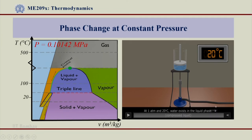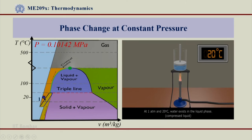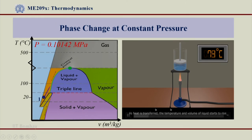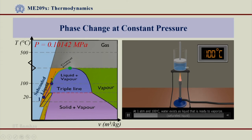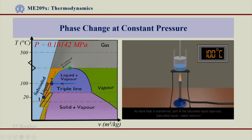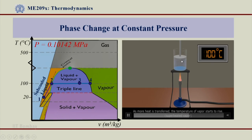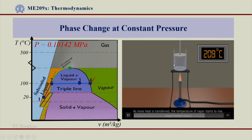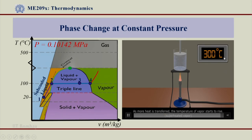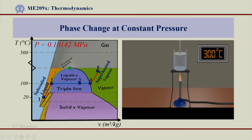Let us look at what happens on the TV diagram and simultaneously observe the experiment on the right side. Point 1 is the initial position and heating has started — a flame is applied. At point 2 it has reached 100 degrees centigrade, which is the phase change at constant temperature, and the piston is moving up to maintain the same pressure. At point 4, at volume fraction 0.4, there is complete conversion to the vapor region, and heating continues up to approximately 300 degrees centigrade, which is the final point 5.